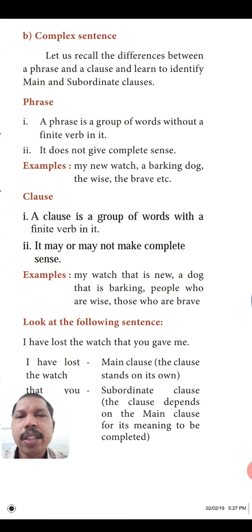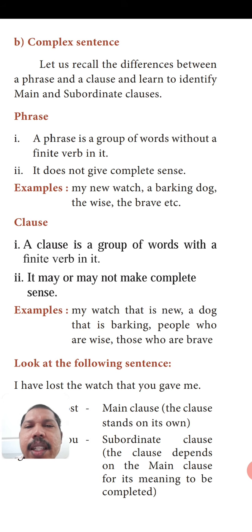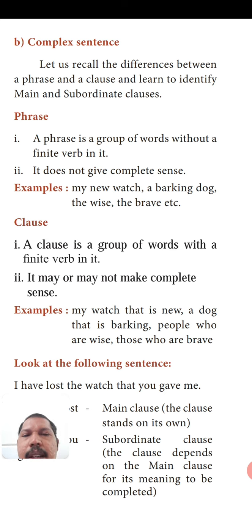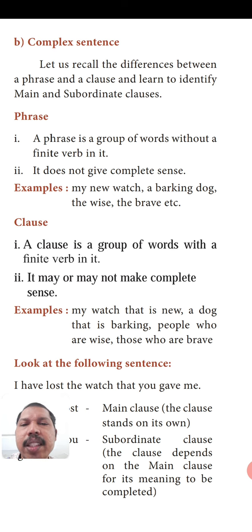Next, the complex sentence. In a simple sentence, only one independent clause is there. Now let us recall the difference between a phrase and a clause. A phrase is a group of words without a finite verb in it — no finite verb in a phrase; a non-finite verb may be there but not a finite verb. It does not give complete sense. Examples: 'my new watch,' 'a barking dog,' 'the wise,' 'the brave,' 'in case of,' 'due to,' 'on account of,' 'in my opinion' — all these are examples of phrases.